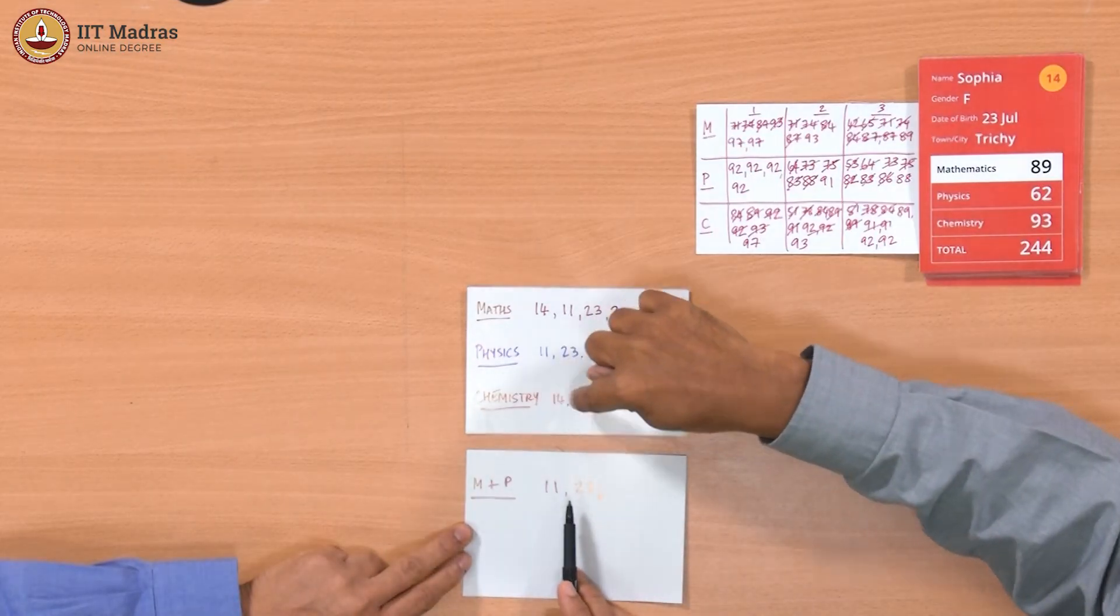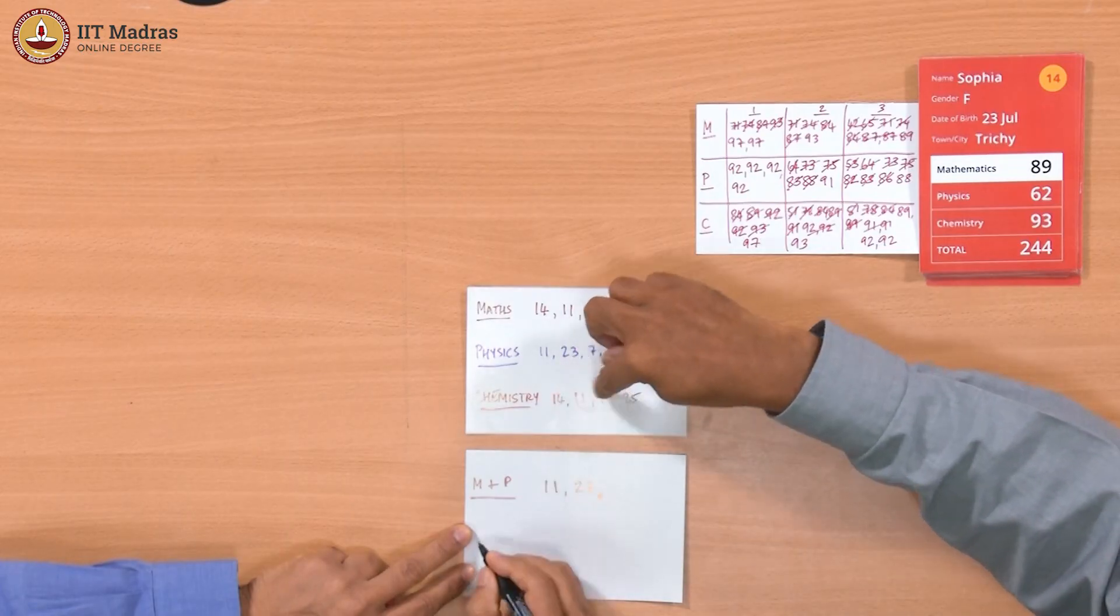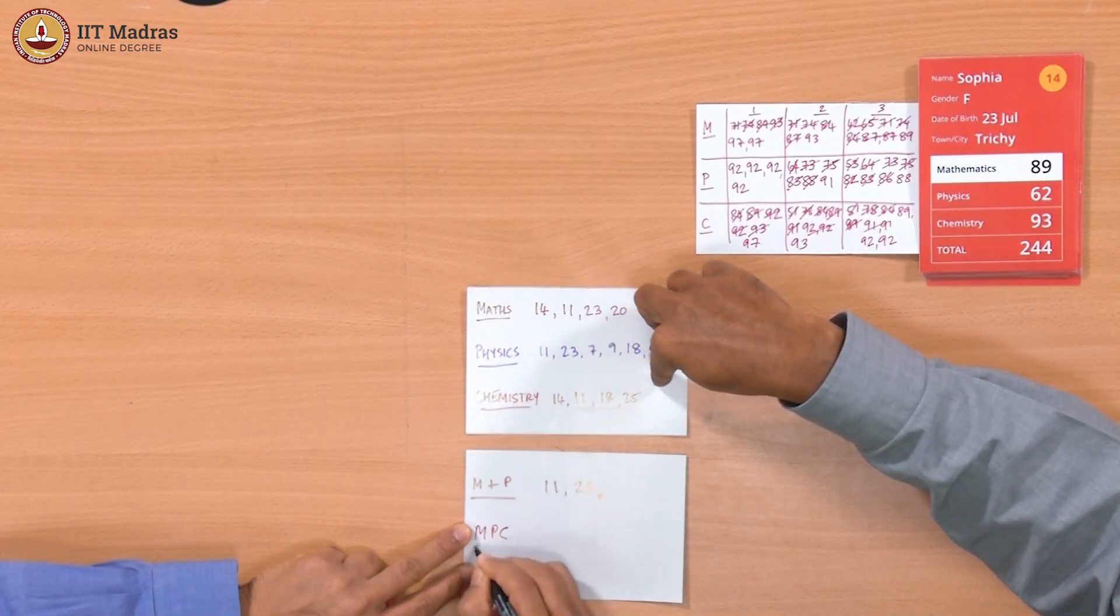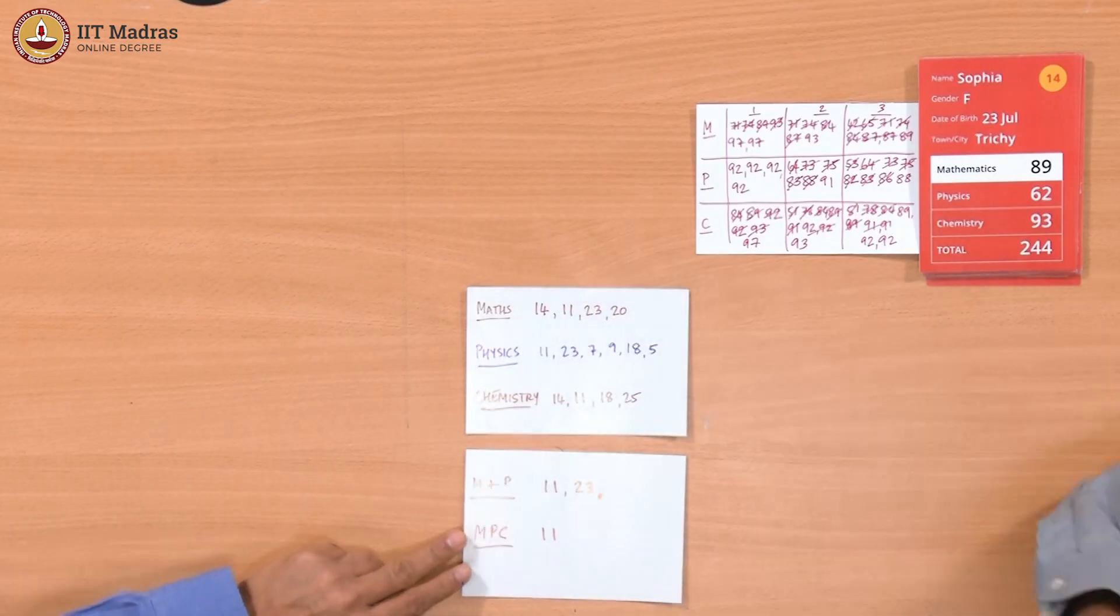Now you intersect that with chemistry. We can check, go through the smaller list. 11. So 11 is there. I will write MPC. So 11 is there. And? 23 is not there. That is it, 23 is not there. I won. You got 1. I said at most 1. You said at most 1. So 1.